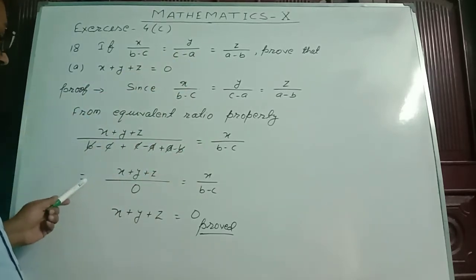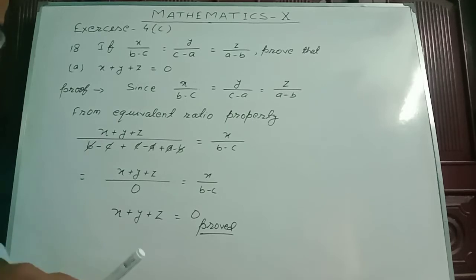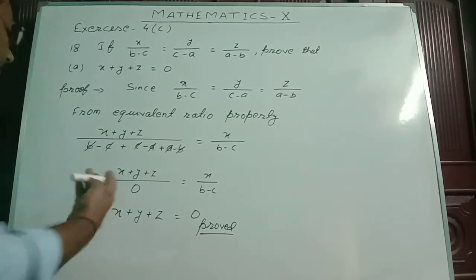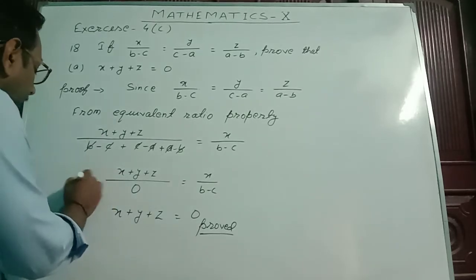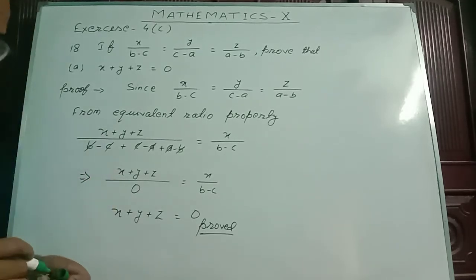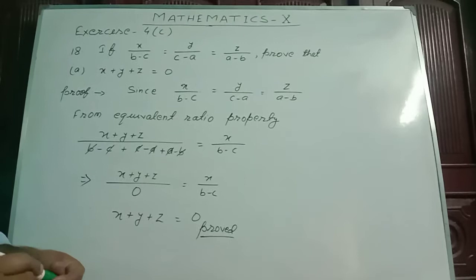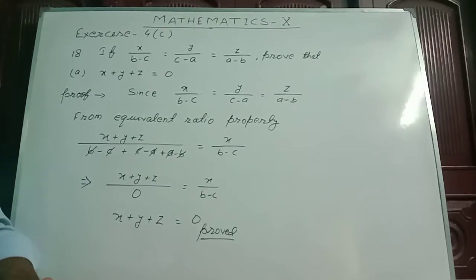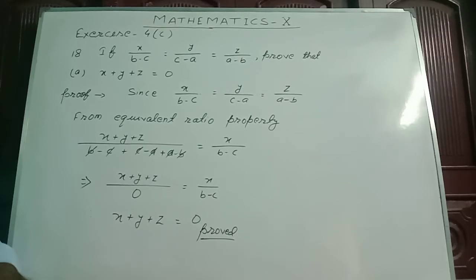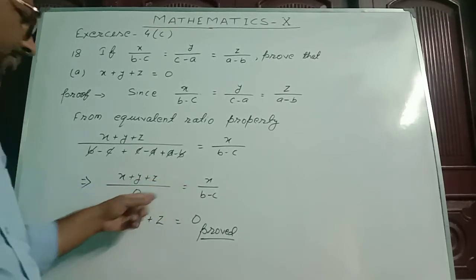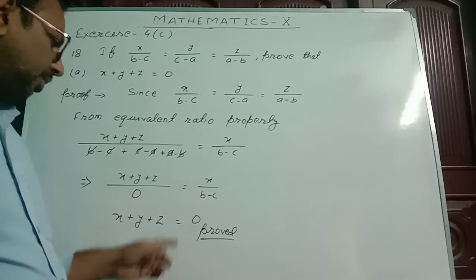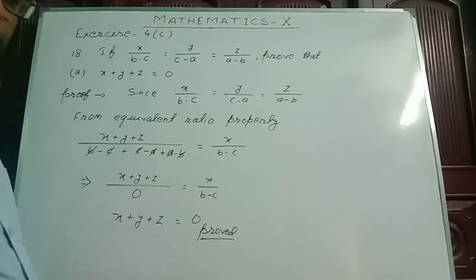This implies that x plus y plus z by b minus c plus c minus a plus a minus b — all the plus/minus terms cancel to 0 — so x plus y plus z by 0 equals x by b minus c. Therefore, x plus y plus z, by cross multiplication, equals 0. Proved.